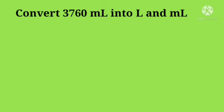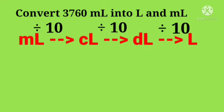Next, convert 3760 mL into liter and mL. mL, then cL, then dL, and L. All steps will be divided by 10.